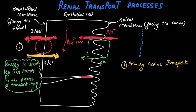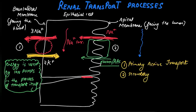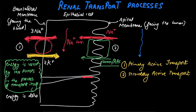This is secondary active transport. Like glucose, amino acids, phosphate, and lactate are also transported along with sodium. It is called secondary active because the energy is derived indirectly from ionic gradients created by the sodium-potassium ATPase pump. This is an important point: energy is derived indirectly from ionic gradients created by the sodium-potassium ATPase pump.